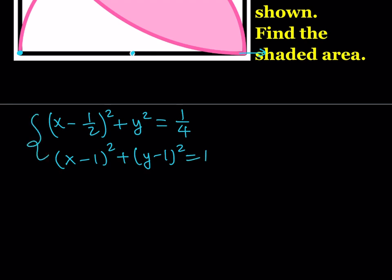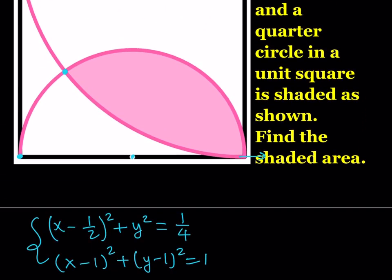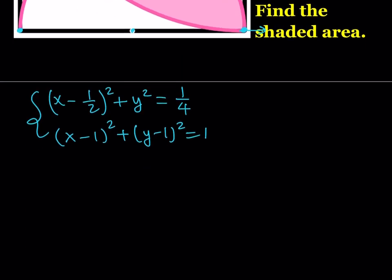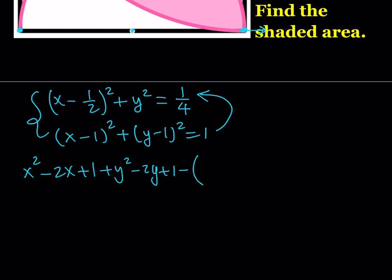This is a quadratic system and we need to solve it to find the intersection point. Obviously these two curves intersect at two points, one of them being (1, 0), so one solution is trivial. To simplify and get rid of the quadratics, we can subtract the smaller equation from the larger. Expanding the second equation gives x² − 2x + 1 + y² − 2y + 1, and we subtract x² − x + 1/4 + y², giving a remainder of 3/4.